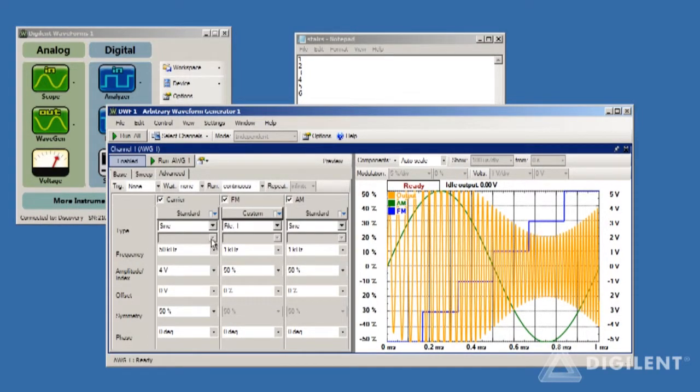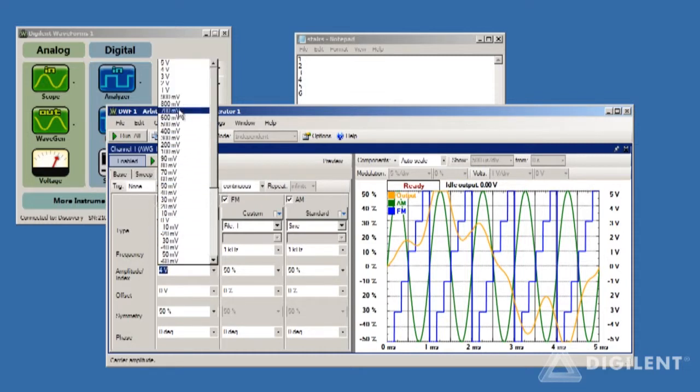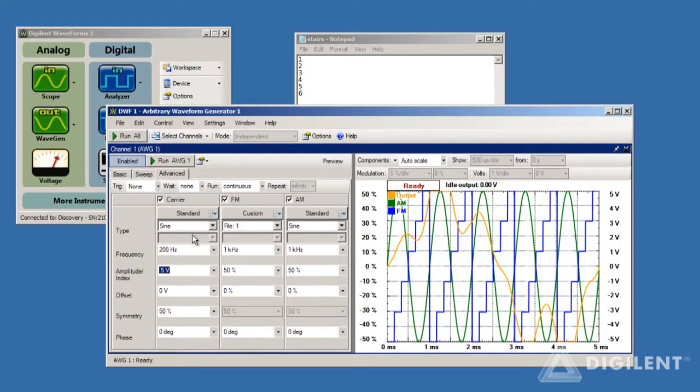Now let's create a frequency modulated signal using this data. Let's set up our carrier wave to be a sinusoid with a frequency of 200 Hz. We'll set the carrier amplitude to, for example, 5 volts.